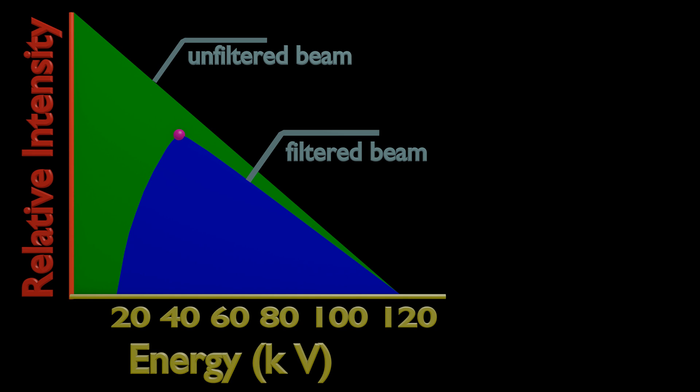Reaches a peak, then decreases with energy. The peak intensity occurs at an energy of E-max divided by 3.